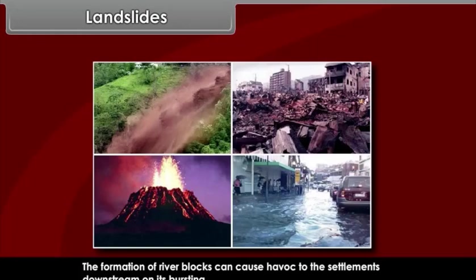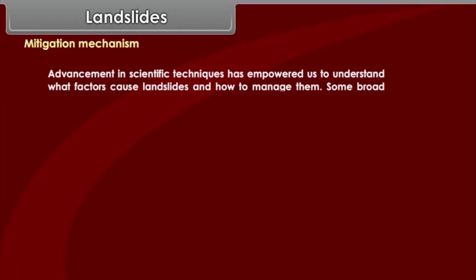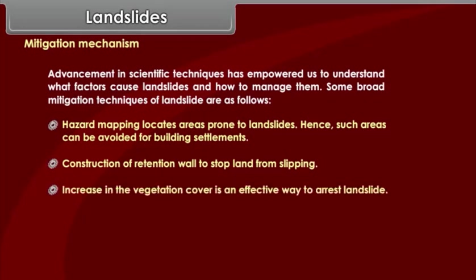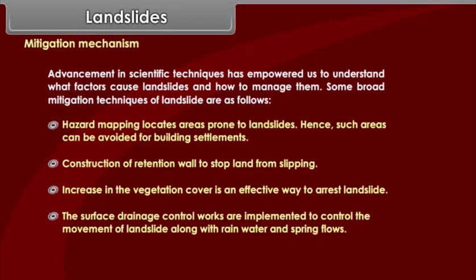Mitigation mechanism. Advancement in scientific techniques has empowered us to understand what factors cause landslides and how to manage them. Some broad mitigation techniques of landslide are as follows: hazard mapping locates areas prone to landslides, hence such areas can be avoided for building settlements. Construction of retention vault to stop land from slipping. Increase in the vegetation cover is an effective way to arrest landslide. The surface drainage control works are implemented to control the movement of landslide along with rainwater and spring flows.